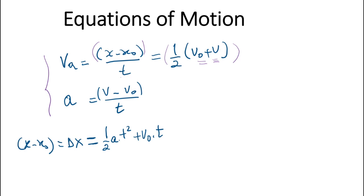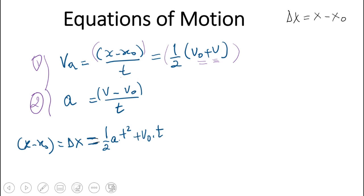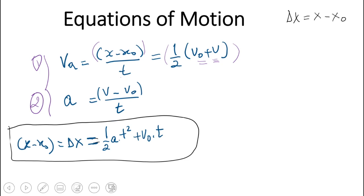We also talked about average acceleration — the rate of change of velocity. Now from these two equations, which I call equation one and equation two, we are going to derive a third equation: the displacement equation. The displacement equation is x minus x₀, also written as Δx, and it should equal one-half times acceleration times t squared plus v₀ times t.